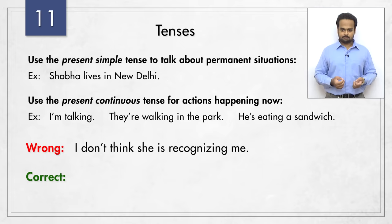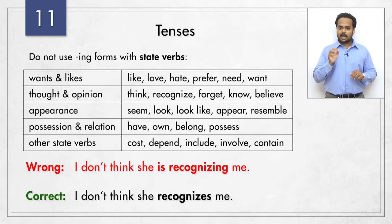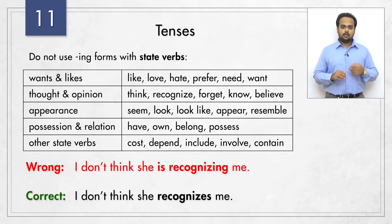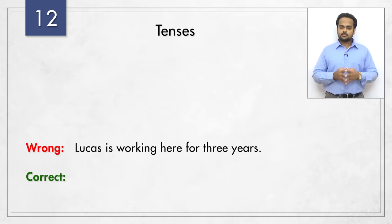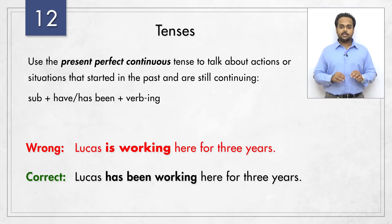Even though this might be happening in the moment of speaking, with some verbs we don't use -ing forms. Instead, we prefer to use the present simple tense with these because they're not physical actions. Such verbs are called state verbs because they express a state or situation. You see some of the common ones on the screen. Remember that we use them in the present simple tense. Next sentence – 'Lucas is working here for three years.' The correct form is 'Lucas has been working here for three years.' If an action or situation started in the past and it's still continuing, you need to use the present perfect continuous tense with 'have been' or 'has been' plus the verb in -ing form.